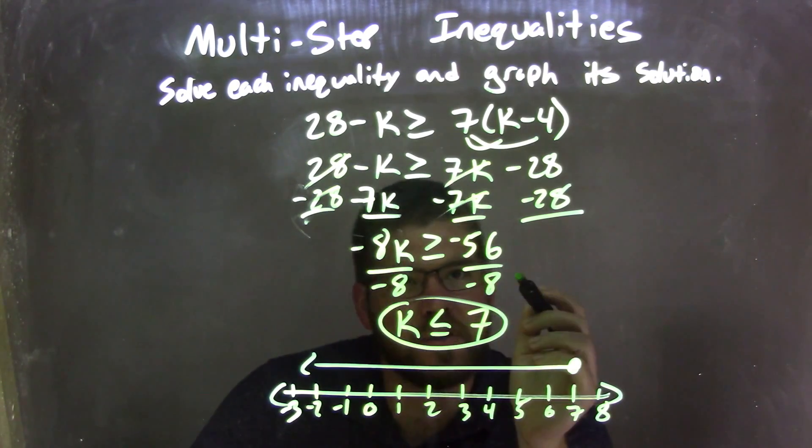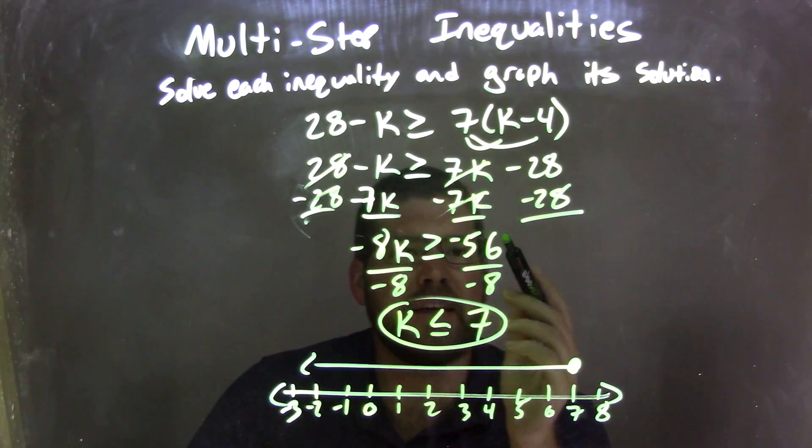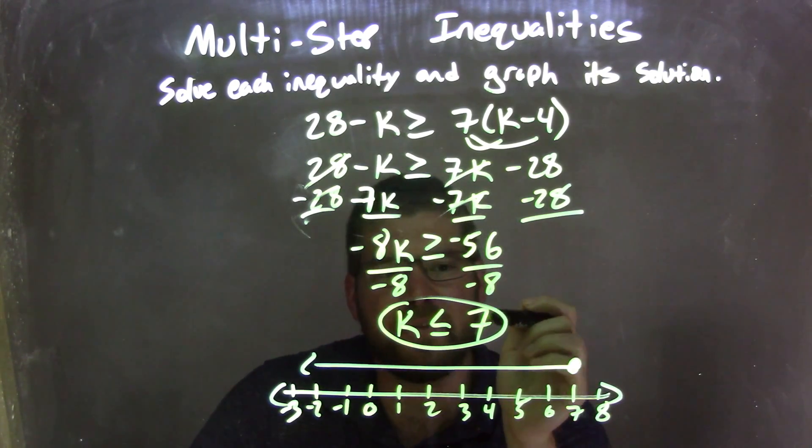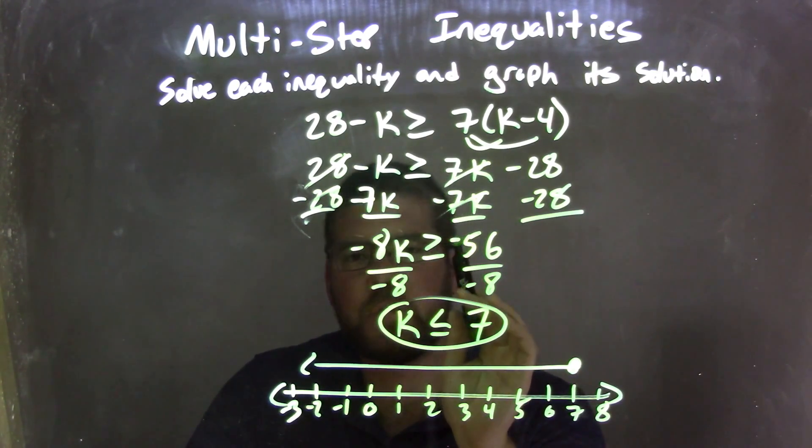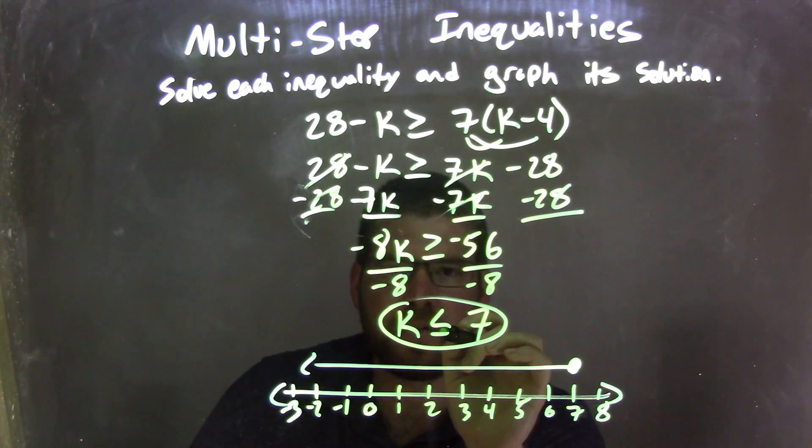I then divided by negative 8 to both sides, giving me k by itself on the left. Negative 56 divided by negative 8 is positive 7. A negative divided by a negative is a positive. But since I divided by a negative over the inequality, that inequality needs to flip from greater than or equal to less than or equal to.